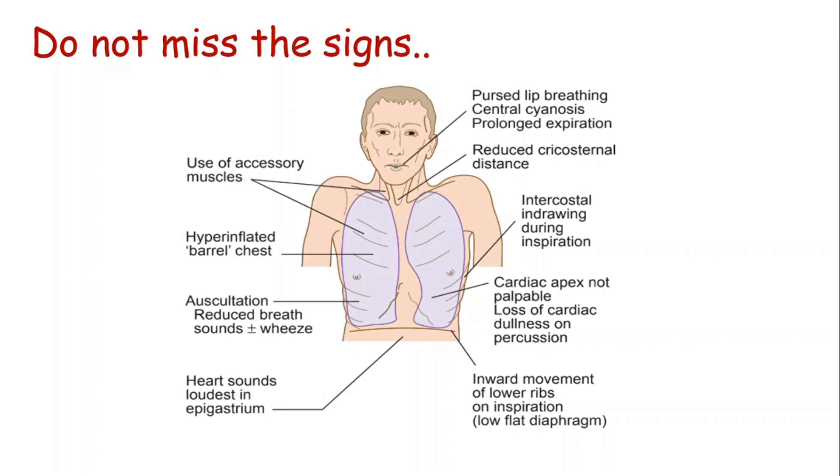On to the neck, we begin to see the use of accessory muscles and the cricosternal distance is a bit reduced. Along the chest wall there is hyperinflated barrel chest which is very visible, intercostal indrawing during inspiration. The muscles are used and there is inward movement of the lower ribs on inspiration that is visible in emphysema patients because of the low flat diaphragm.